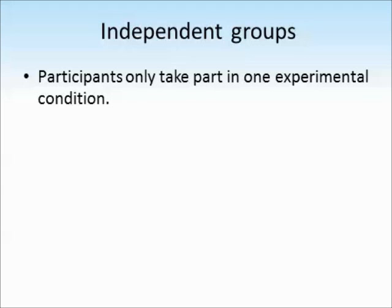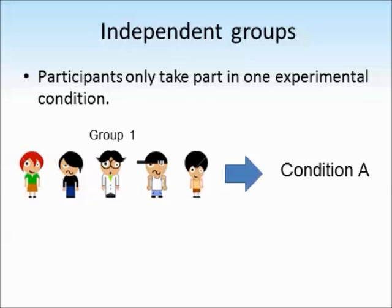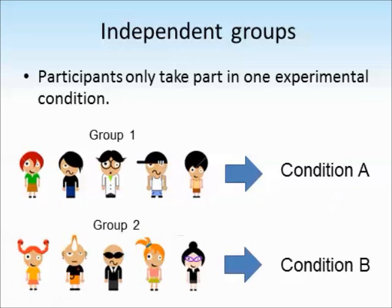In an independent groups design, participants only take part in one of the experimental conditions. For example, group one might take part in condition A — trying to remember a list of 10 words — while group two are completely different participants taking part in condition B, looking at 10 pictures to remember. Because there are different participants in each condition, think about how this might present the researcher with extraneous variables. Also note that each participant only takes part in one condition, so they won't have become bored, tired, or more practised by the time they reach a second or third condition.